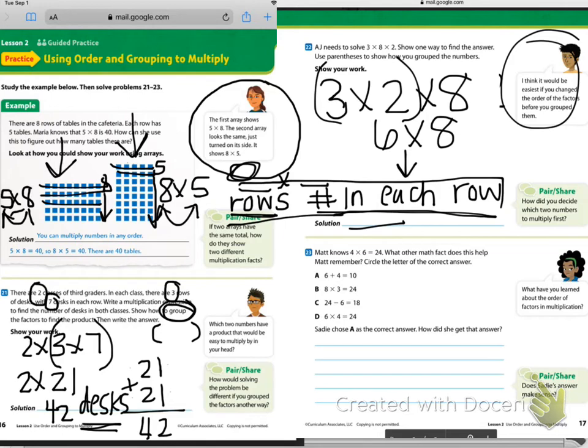Finally, number 23. Matt knows four times six equals 24. What other math fact does this help Matt remember? Circle the letter of the correct answer. What have we learned about the order of factors in multiplication? She's helping you, giving you a huge hint. If we know that four times six is 24, which of these other, only one of them is correct? Pick the correct answer.